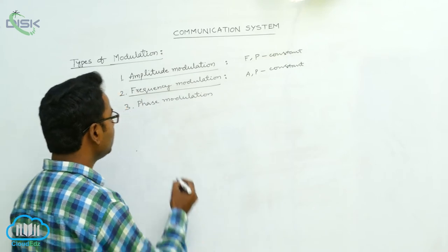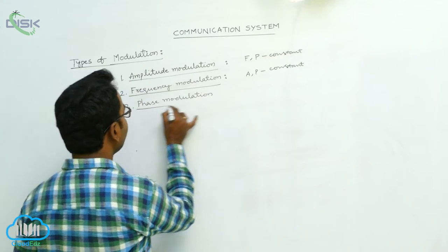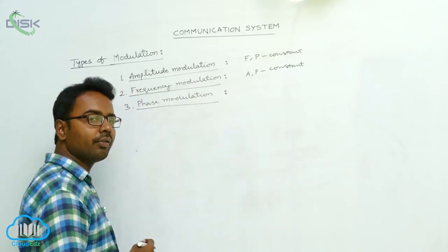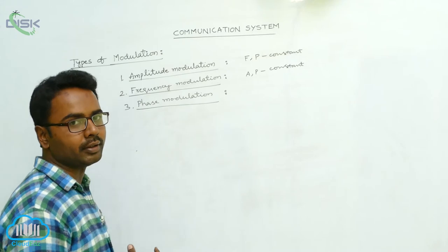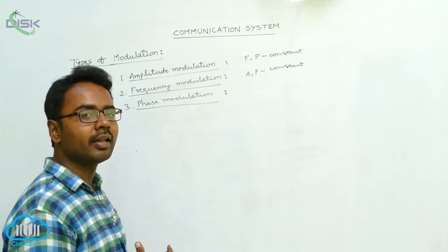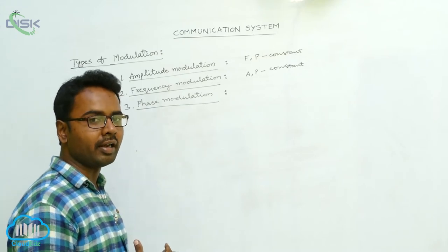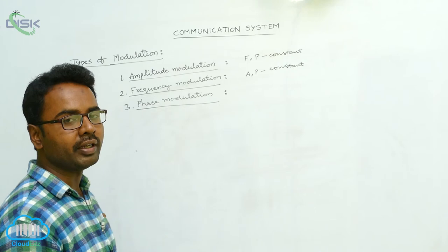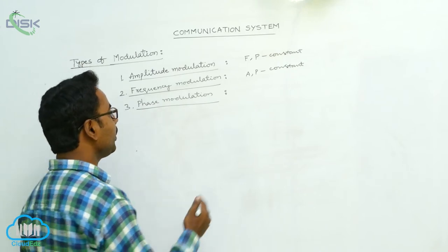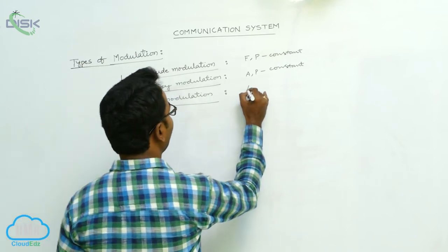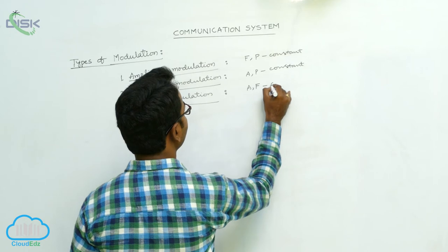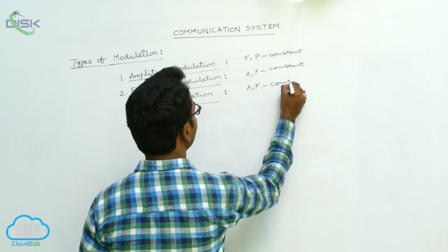Now we see phase modulation. In phase modulation, the phase of carrier signals is varied according to the variation of phase of the message signals, keeping the amplitude and frequency of carrier signals constant.